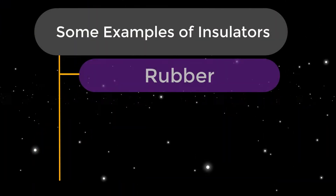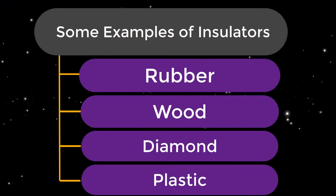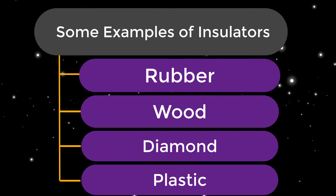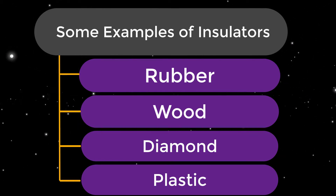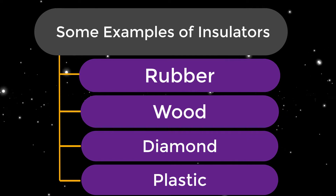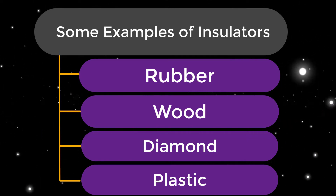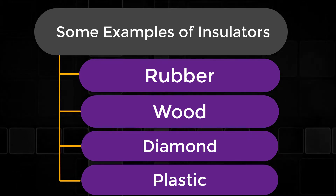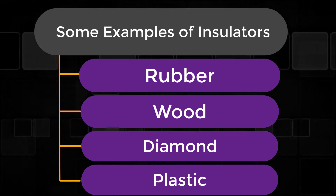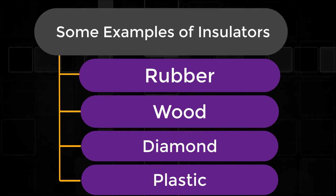Rubber, wood, diamond, and plastic are some examples of insulators. Insulators such as plastics are used for coating of electrical wires. These insulators prevent the flow of electricity to unwanted points and protect us from electric shocks.